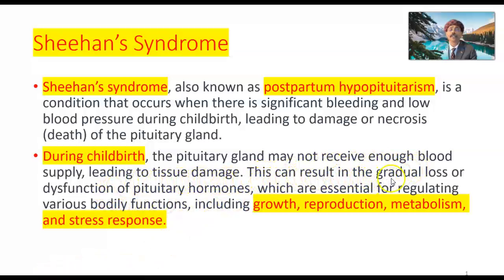This can result in the gradual loss or dysfunction of pituitary hormones such as growth hormone, follicle stimulating hormone, luteinizing hormone, thyroid stimulating hormone, adrenocorticotropic hormone, and prolactin, which are essential for regulating various bodily functions including growth, reproduction, metabolism, stress response, and lactation.